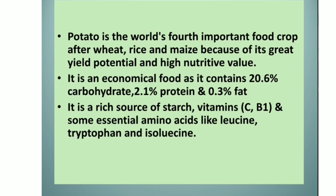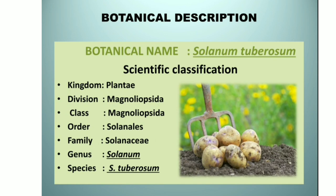Potato is a rich source of starch, vitamins like C, B1, and some essential amino acids like leucine, tryptophan and isoleucine. The botanical name of potato is Solanum tuberosum. Its scientific classification: kingdom Plantae, division Magnoliopsida, class Magnoliopsida, order Solanales, family Solanaceae, genus Solanum, and species S. tuberosum.